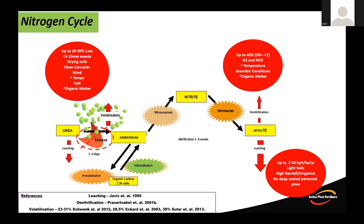Leaching can range from as low as 2 kg of N per year up to 50 kg of N per year, dictated by lighter soil types, intense rainfall events, over-irrigation, and lack of a deep-rooted perennial in your pasture sward to capture nitrate nitrogen as it moves down the profile. Nitrogen is a dynamic nutrient — it doesn't stay in one form for long, can be mobilised into organic matter or mineralised from organic carbon, and is subject to multiple loss and uptake pathways.